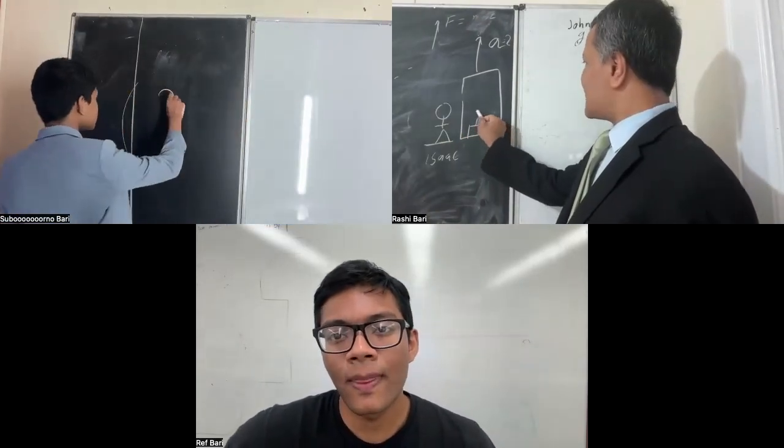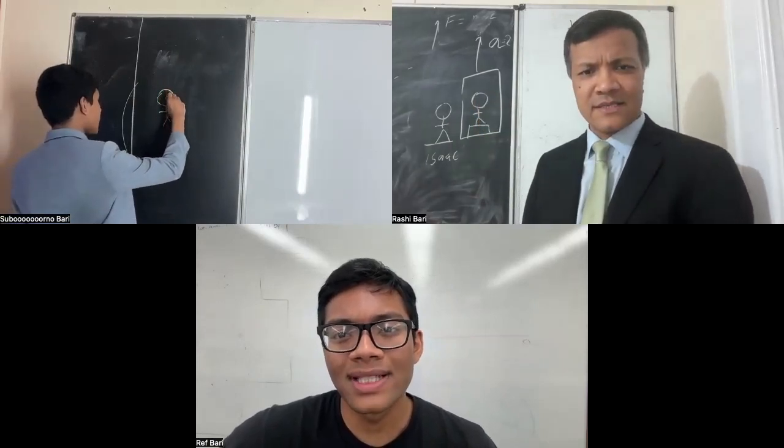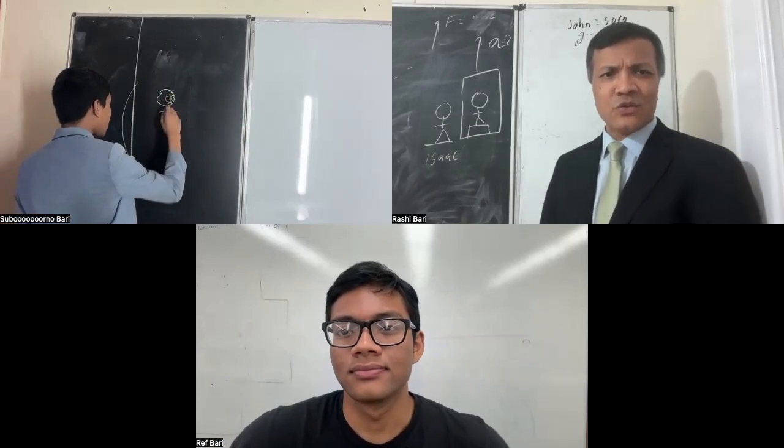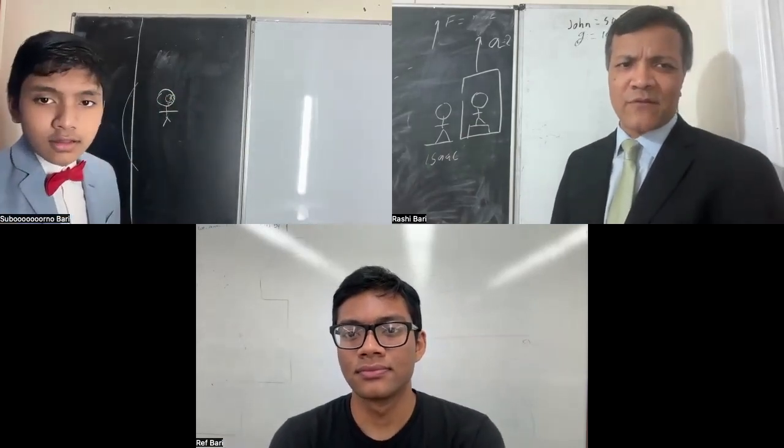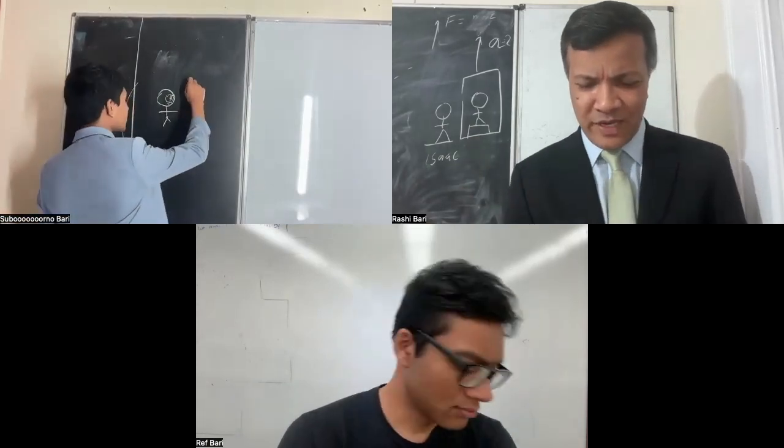There is John standing on the scale. Can you draw a free body diagram and find what would be the reading on the scale? Both of you, go ahead.